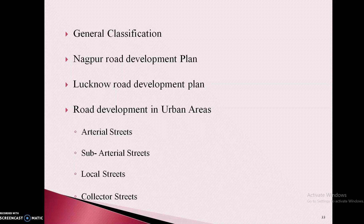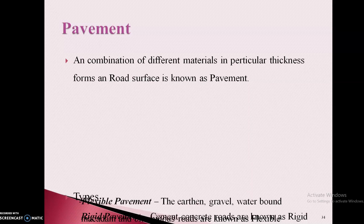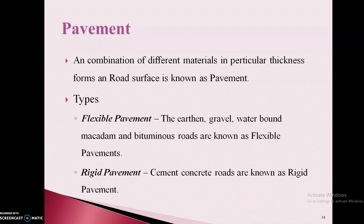These are roads — a road is nothing but a finished surface. For constructing a road, layers of material are provided; during construction, it is considered as pavement. Combination of different materials in particular thickness which forms a road surface is known as pavement. There are two types: flexible pavement and rigid pavement. Flexible pavement includes earthen, gravel, water-bound macadam, and bituminous roads. Flexible means there may be changes in dimensions — for example, in summer, bituminous roads start melting slightly, and over time the road pavement gets a little extended in width.